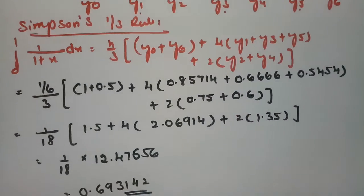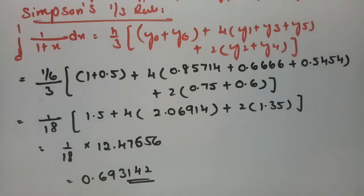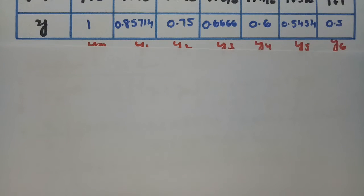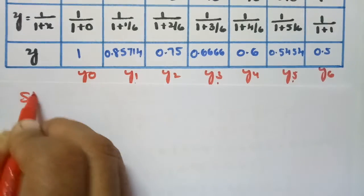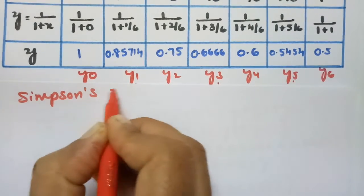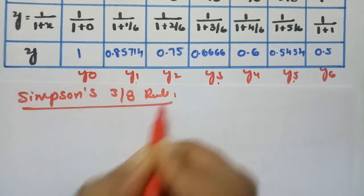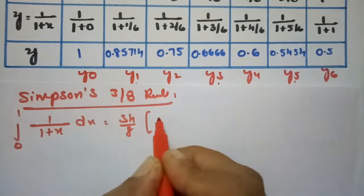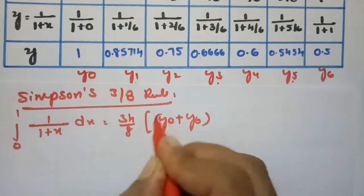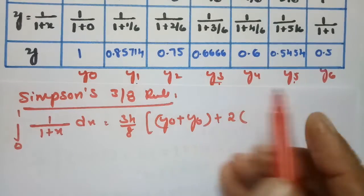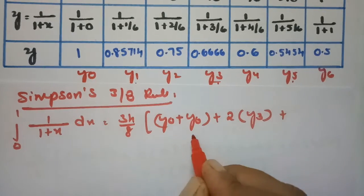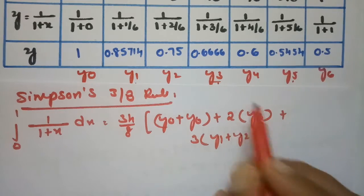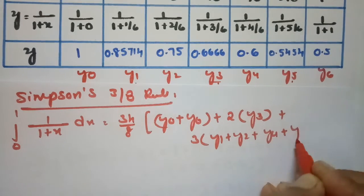Coming to Simpson's 3/8 rule, the formula is also simple. The integral from 0 to 1 of 1/(1+x) dx equals 3h/8 times: (y0 + y6) + 2 times the multiples of 3, which is y3, plus 3 times the rest of the values: y1, y2, y4, y5.